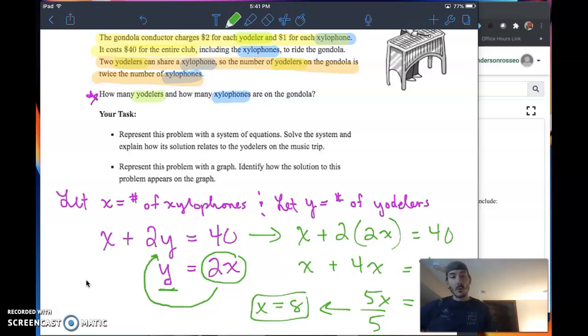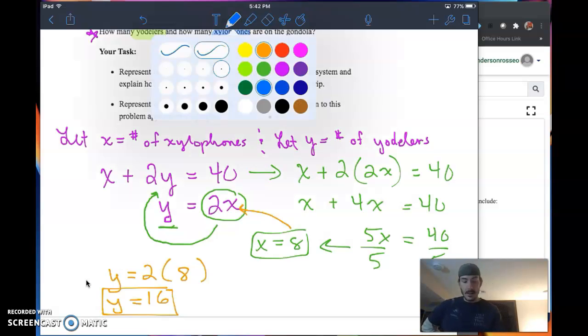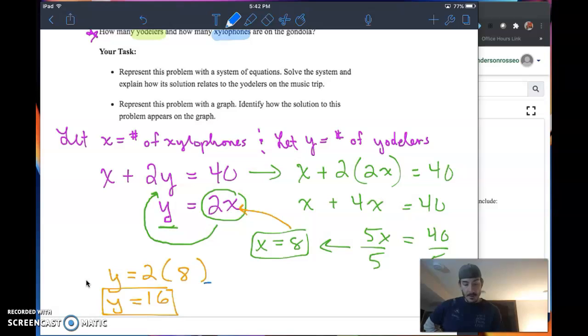Now I'm going to sub back into the second equation, because subbing back into the second equation gives me the ability to instantly solve for y, since y is already isolated. y equals 2 times x, and x we know is 8. y equals 2 times 8, which is 16. So I've got 8 xylophones and 16 yodelers. I should write that out and make it very clear. There are 8 xylophones and 16 yodelers on the gondola.